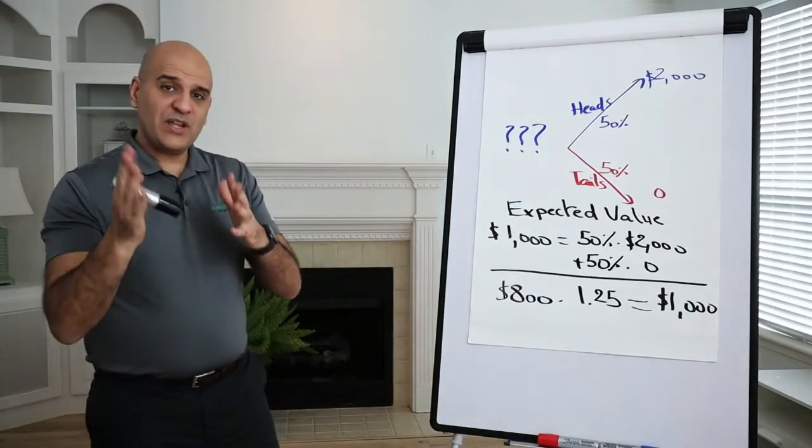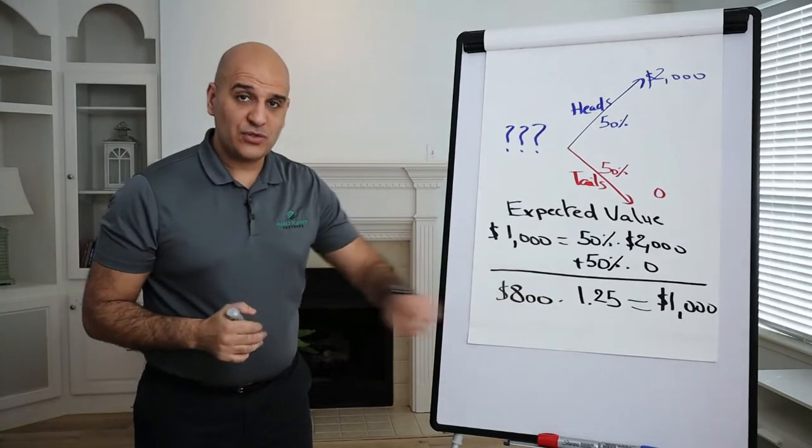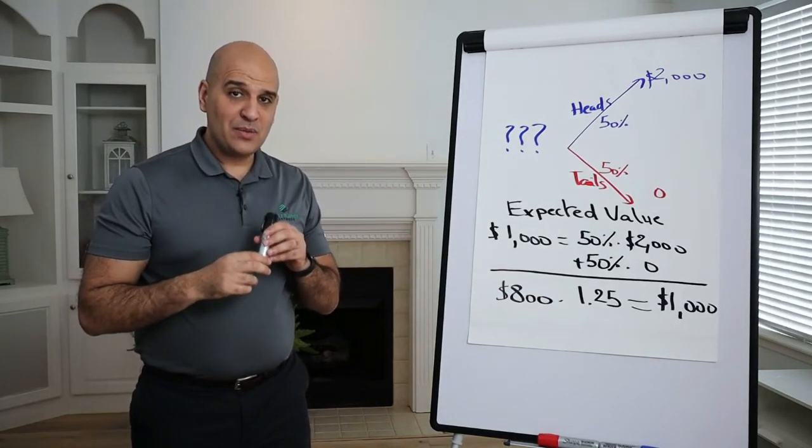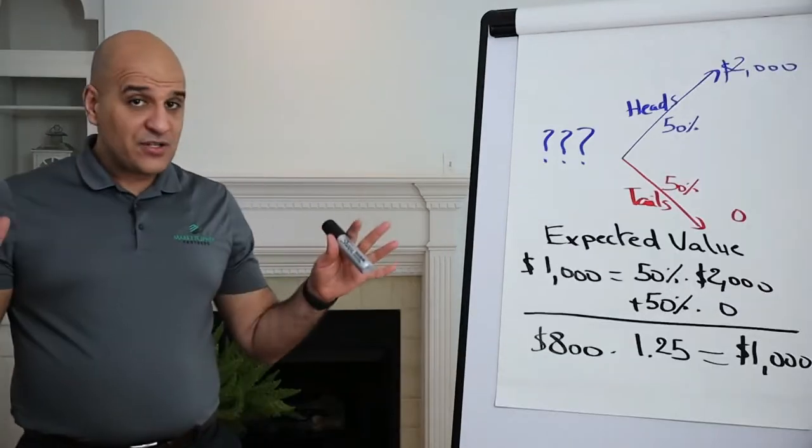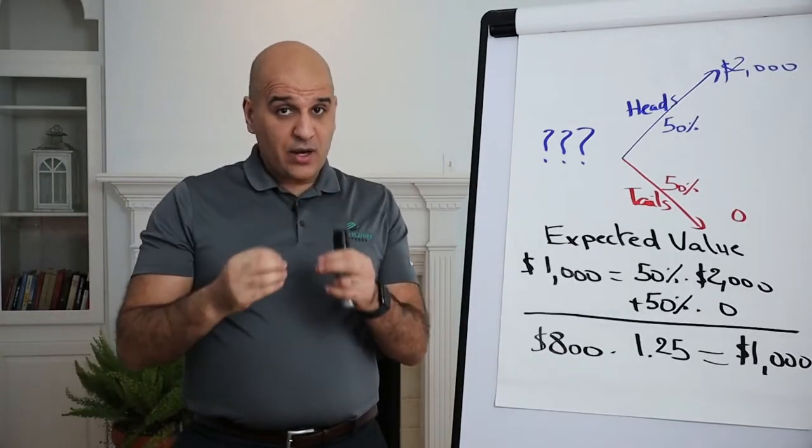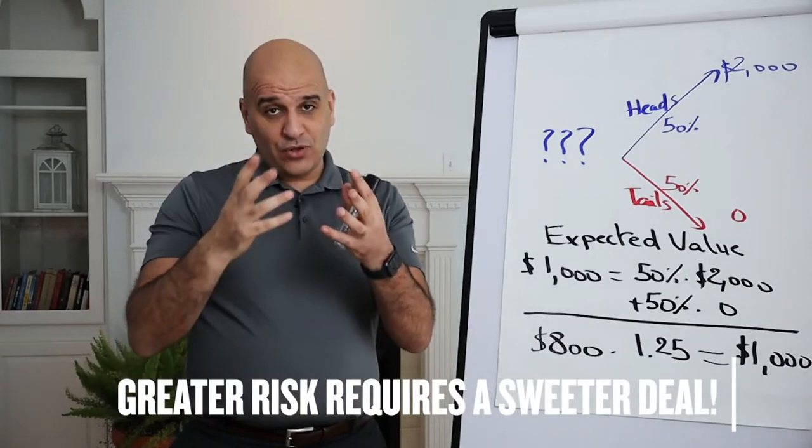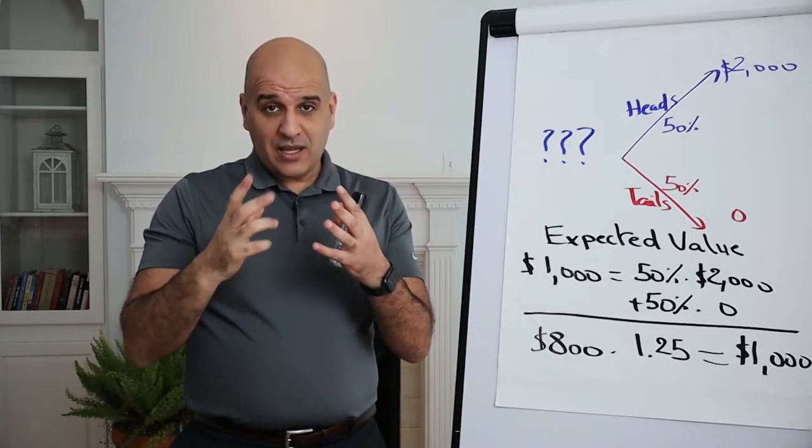Bottom line, this 25% that you require to sweeten the deal is exactly what risk premium is. Whenever there is risk involved, you better require a sweeter deal to get compensated for the risk that you are taking.